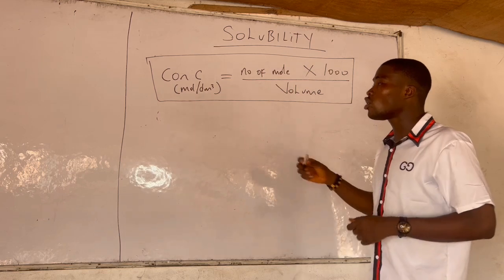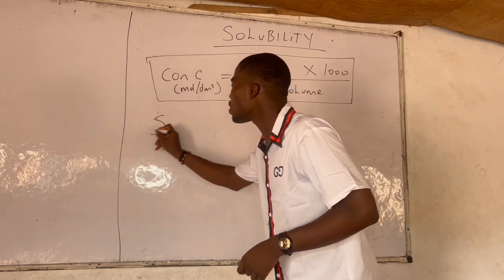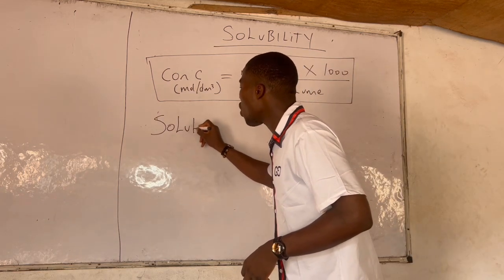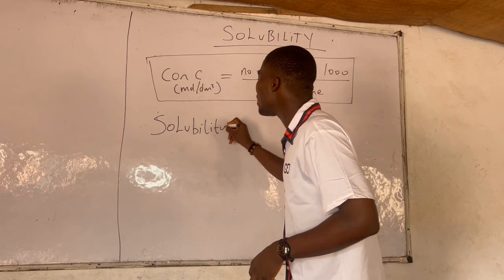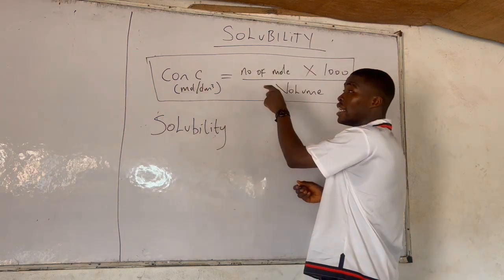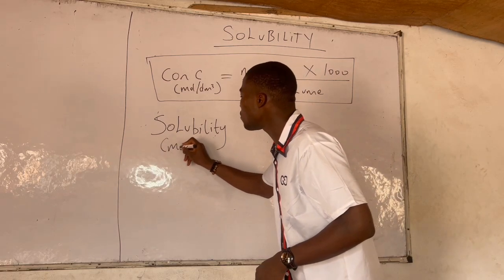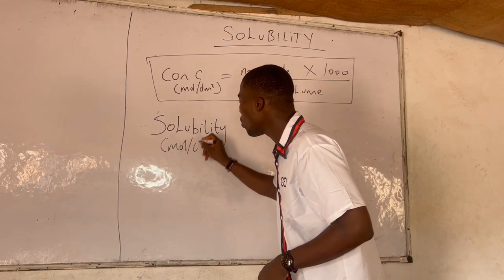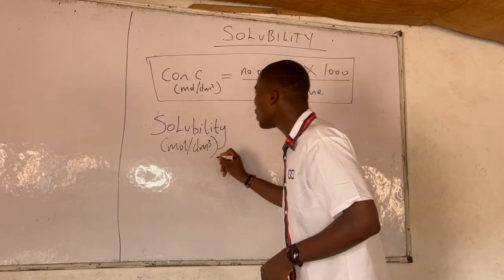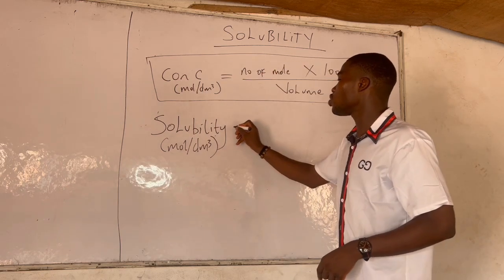So the solubility of a species from various formulas, all of them are derived from the main formula. Solubility in mole per dm³ in mole per dm³ is just the same as this.